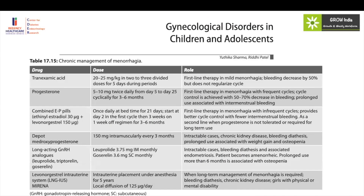How to manage menorrhagia? Basically, if the cycles are regular and the bleeding is mild, giving tranexamic acid will in 50% of cases reduce the amount of bleeding, and prevention of anemia would happen.